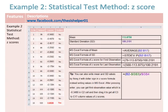Example two is the statistical test Z-scores method. The data set of 16 observations is given. First, you have to find the mean, then the standard deviation, which are 113.8750 and 100.2191 respectively. The MS Excel formulas for mean and standard deviation are also provided.